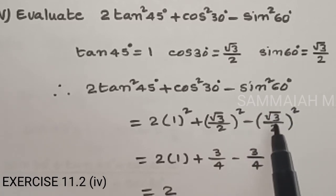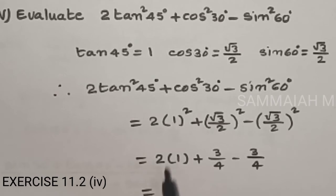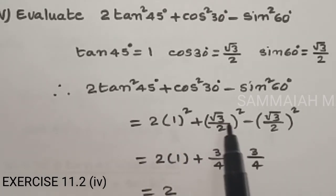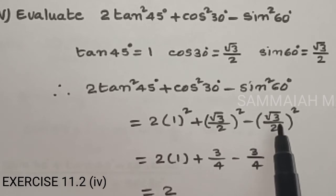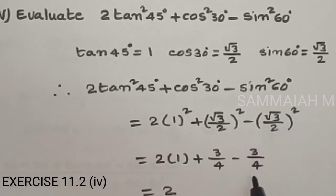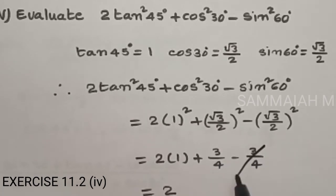Sin 60 is root 3 by 2, squared gives 3 by 4. So 2 times 1 squared is 2, plus root 3 by 2 squared which is 3 by 4, minus root 3 by 2 squared which is 3 by 4. The 3 by 4 terms cancel, giving 2 times 1 equals 2 as the answer.